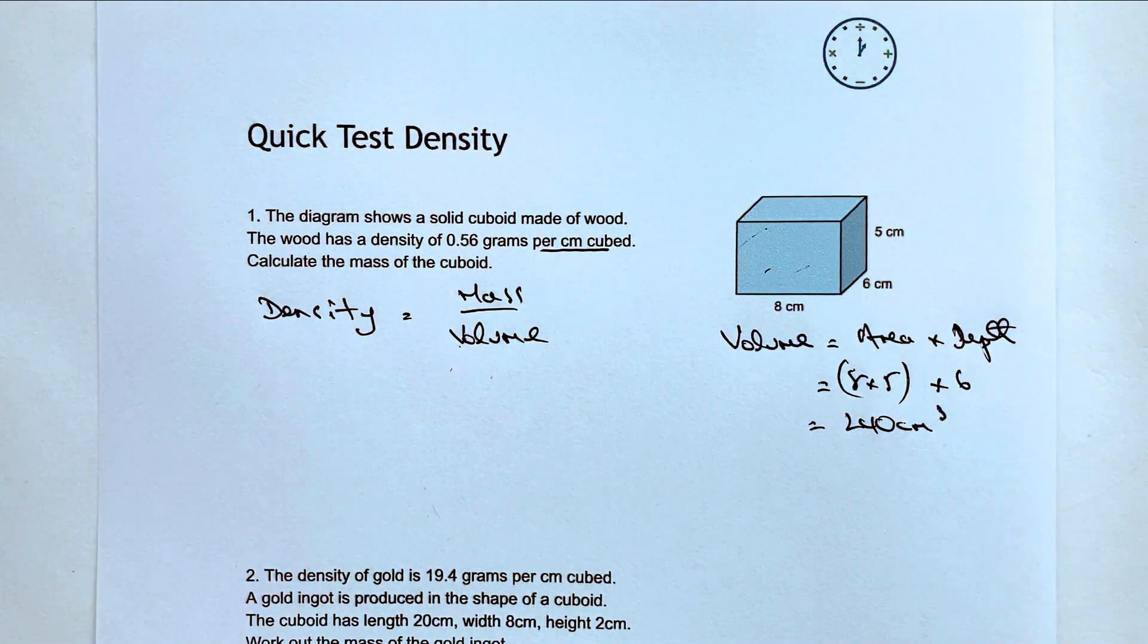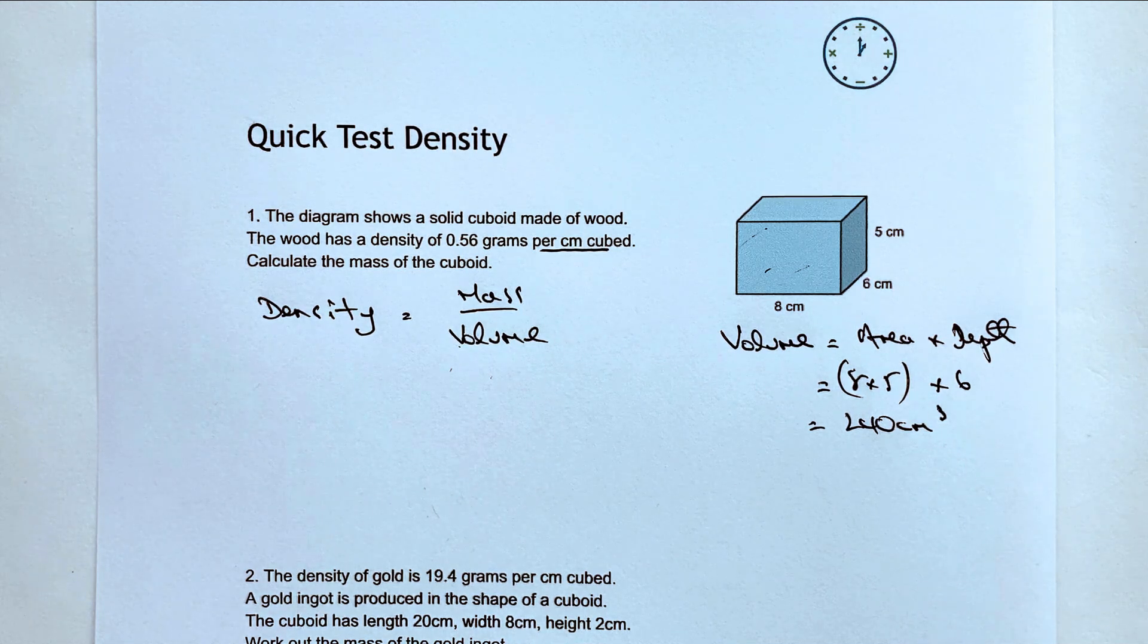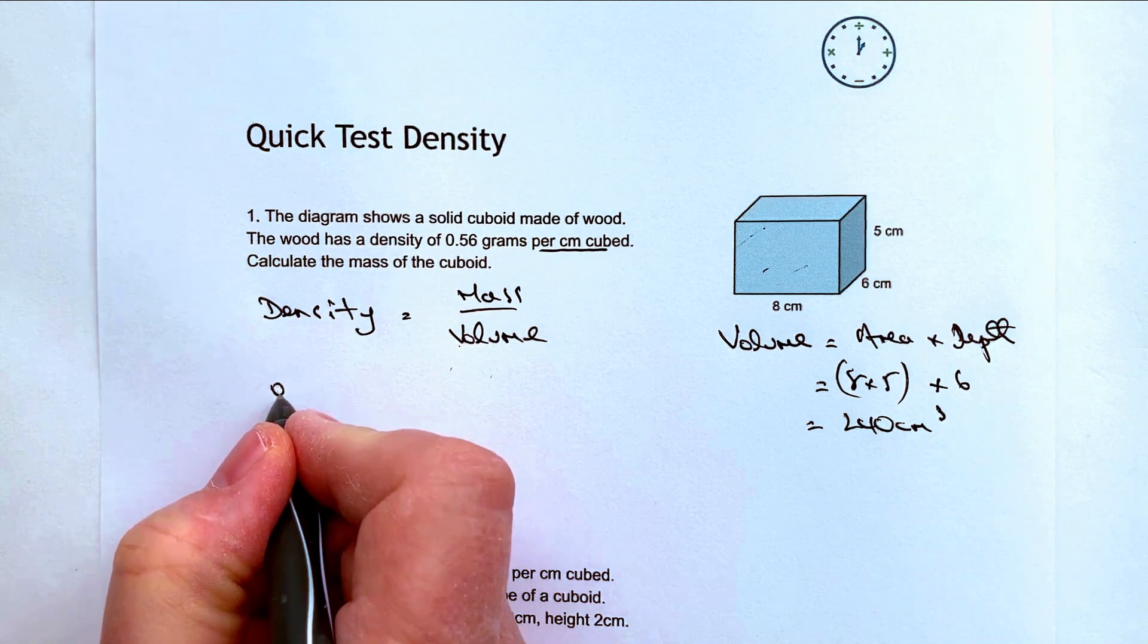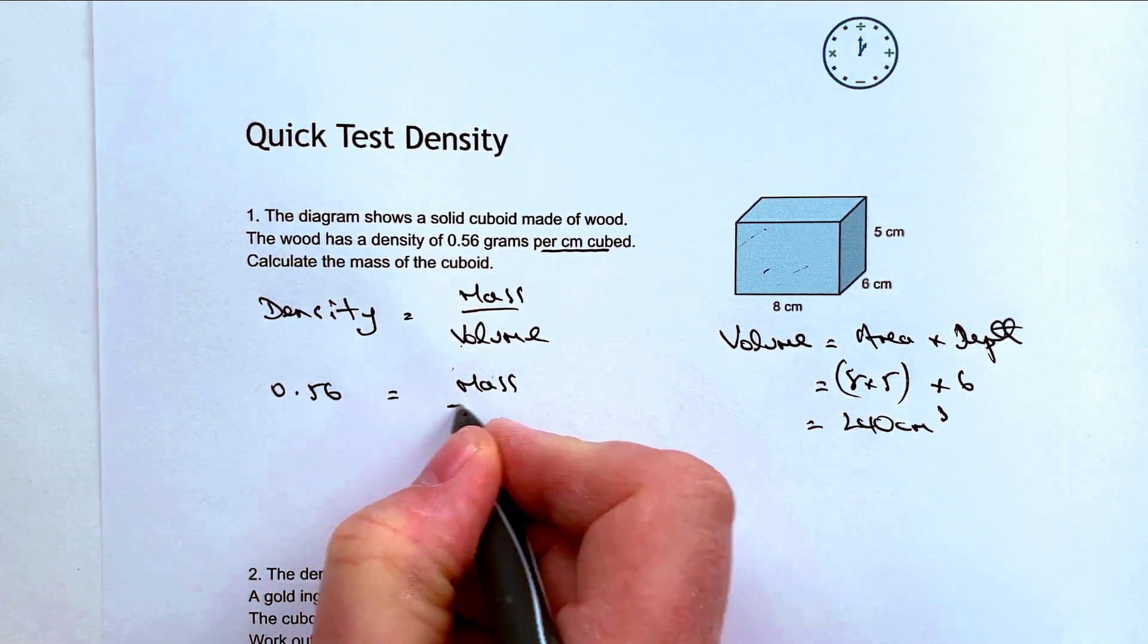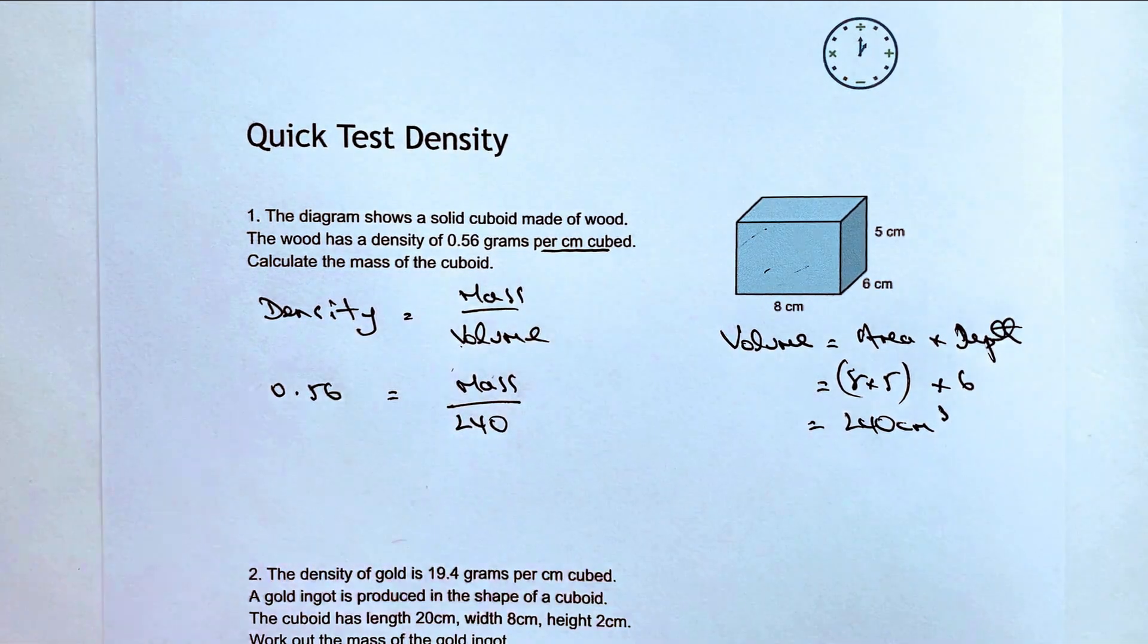Now if you calculate that you should end up with 240 centimeters cubed. That seems a good number to be working with for this type of question, so absolutely fine with that. Usually I would say these are calculator questions, so you should be okay with using a calculator in all of these. So density is 0.56, that equals the mass divided by the volume which we've worked as 240.